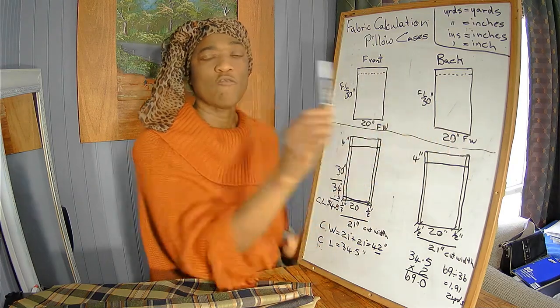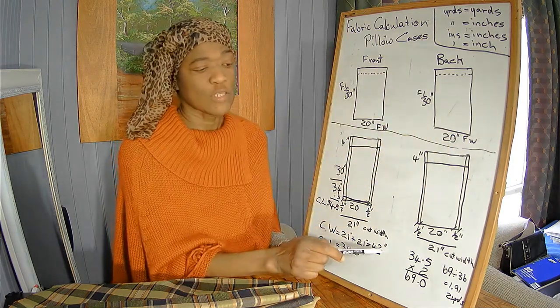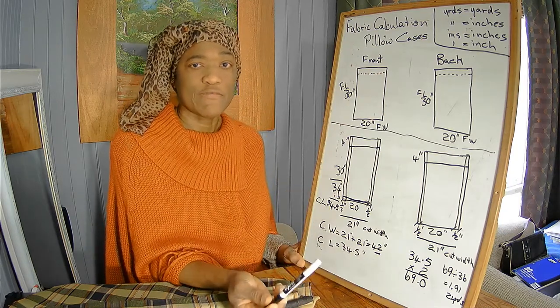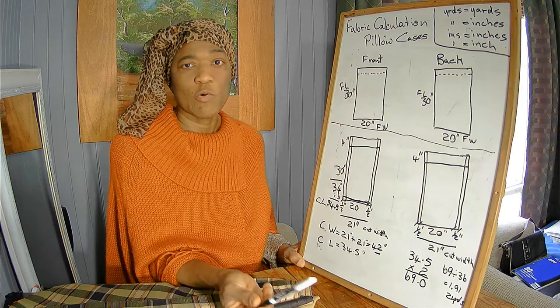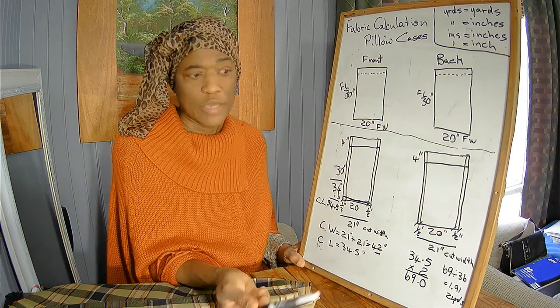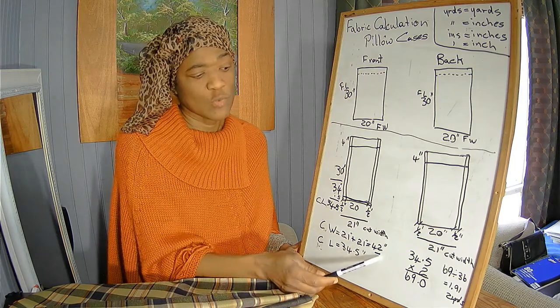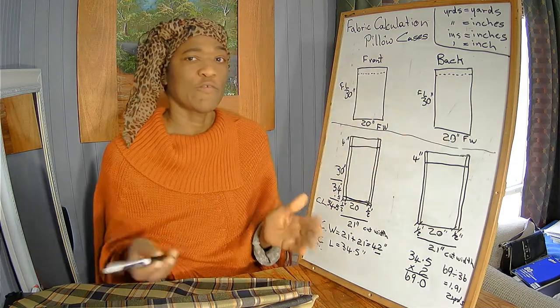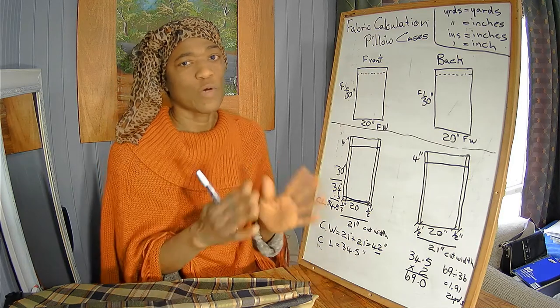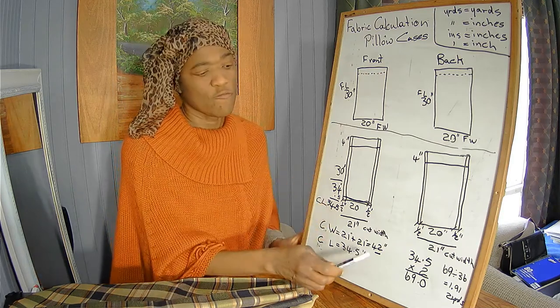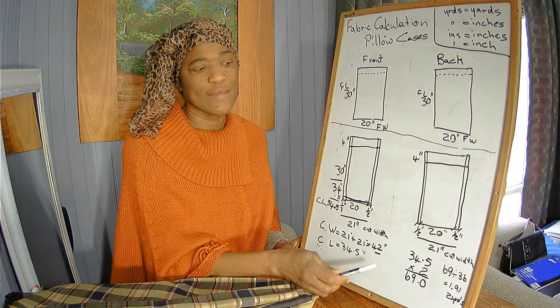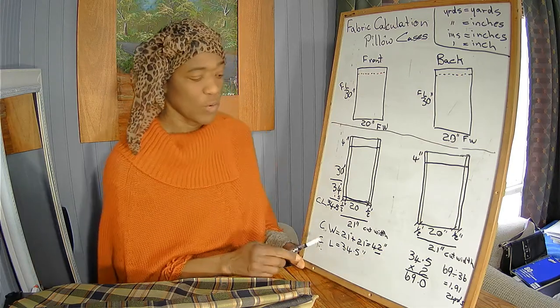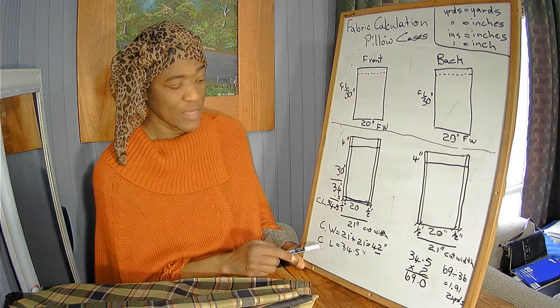Now generally, decorative fabrics are 54 inches or more. So if we have 42 inches for our overall width, it means that the 54-inch fabric we have would have already covered our 42 inches. So let's now concern ourselves with our cut length.